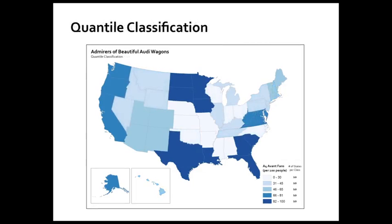Let's look at quantiles using the same exact data. With quantiles, all I want to do is put the same number of observations in each class. I count up the first 10 states and put them in a class, then the next 10, and so on. The value range can vary and there's no equal interval between them. The first category here is 0 to 30, the second is 31 to 45 — much smaller than the first. But the number of states per class stays the same, giving you a nice visually balanced map.